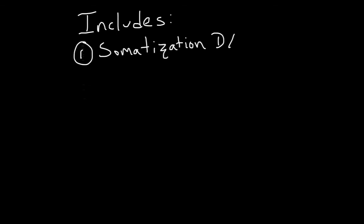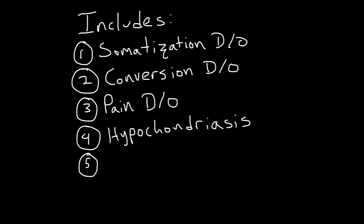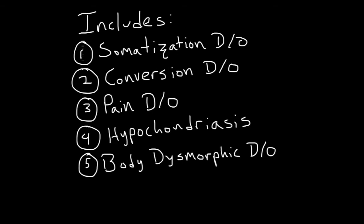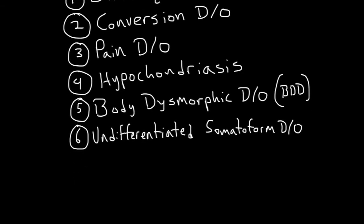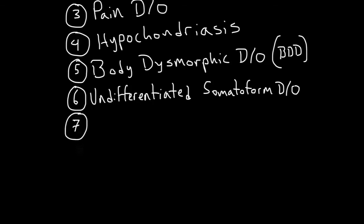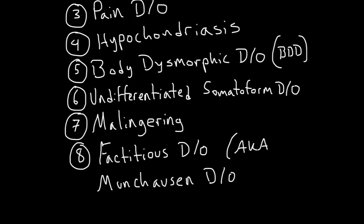Somatoform disorders include the following: somatization disorder, conversion disorder, pain disorder, hypochondriasis, body dysmorphic disorder, undifferentiated somatoform disorder, malingering, and factitious disorder, also known as Munchausen disorder.